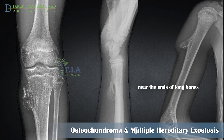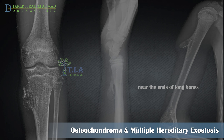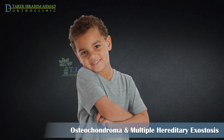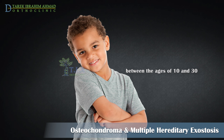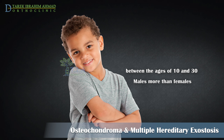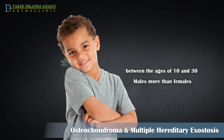Osteochondroma can occur in any bone. It usually appears near the ends of long bones, usually near a growth plate area, but is seen most often around the knee or the proximal humerus. The distal femur is the most common location.